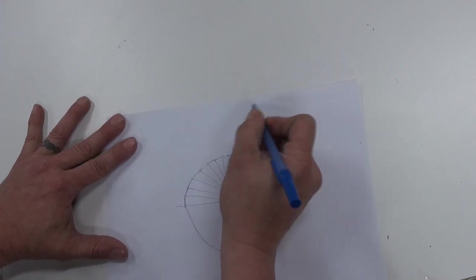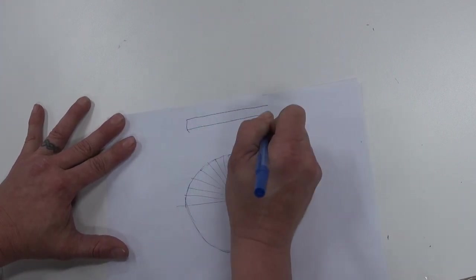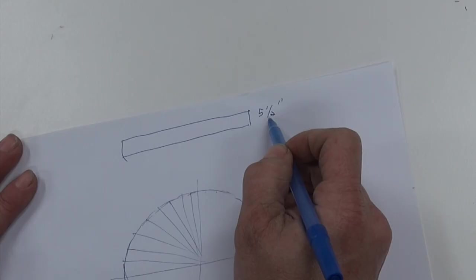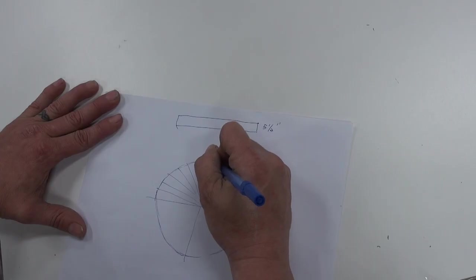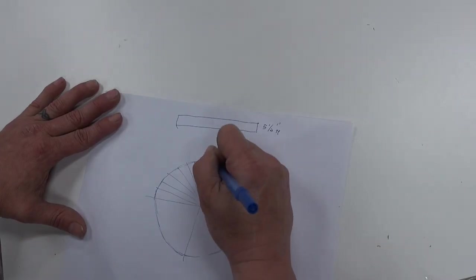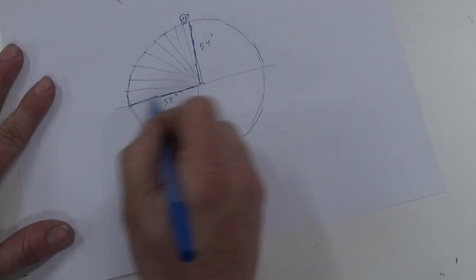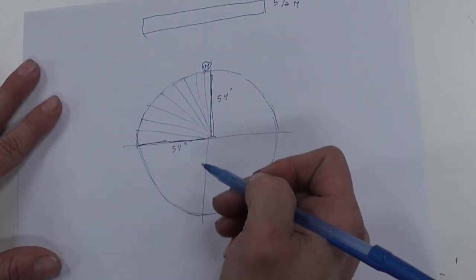What I know is that I have cedar boards five and a half inches wide. So that dimension is the maximum dimension for the end of the sunburst. So my radius is then 54 inches.